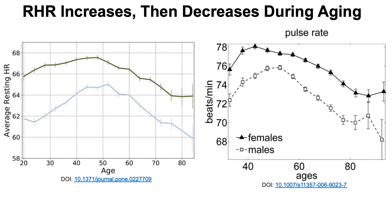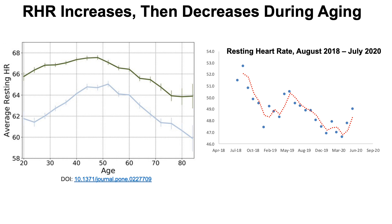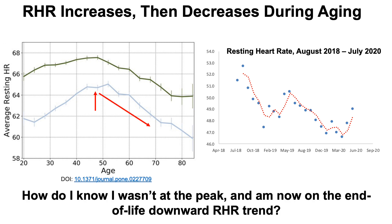Resting heart rate increases and decreases during aging. I've included data from two different studies with basically the same trend — the average resting heart rate on the Y-axis plotted against age. Resting heart rate peaks at about age 50 in both cohorts and then declines towards the end of life. Given my data, how do I know that I didn't already peak and I'm now on the slow downward trend toward a lower resting heart rate?